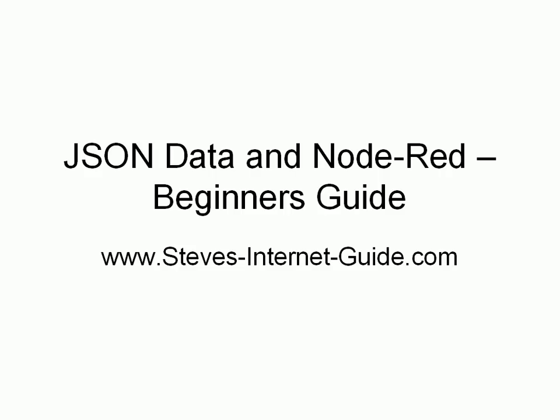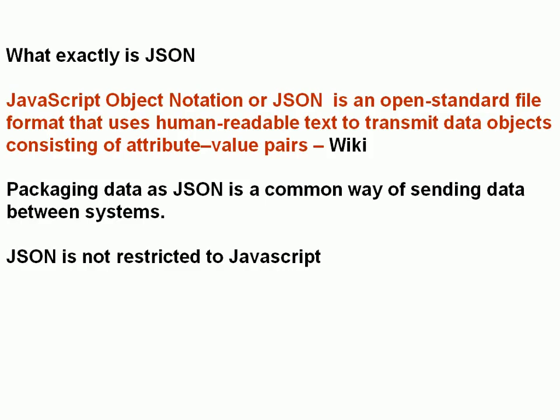In this video, we're going to look at using JSON data within Node-RED. JSON stands for JavaScript Object Notation, and it's an open standard file format. It uses human-readable text to transmit data objects consisting of attribute-value pairs. Packaging data as JSON is a common way of sending data between systems. It's also a common way of storing data on systems — if you're reading configuration files into Node-RED, you might find a lot of the time they're in JSON format, so you need to convert them into JavaScript.